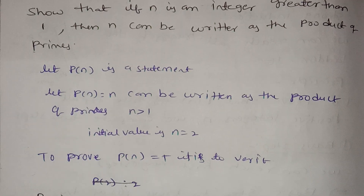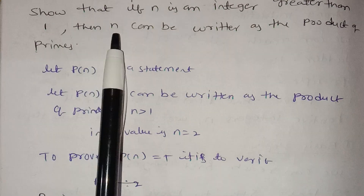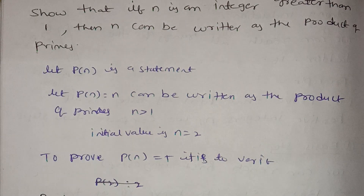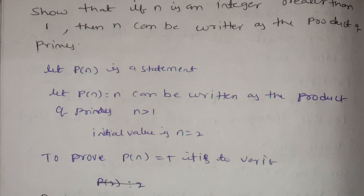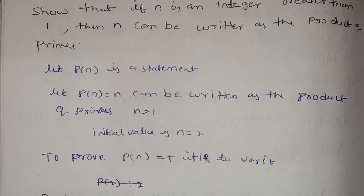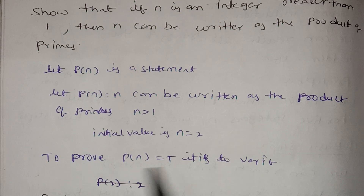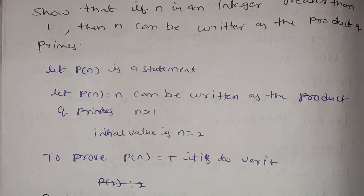Show that if n is an integer greater than 1, then n can be written as a product of primes. Let the prime numbers — we use strong induction. The basis step, then the induction step.